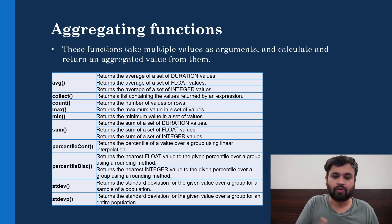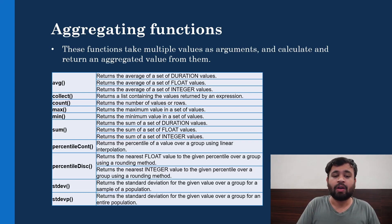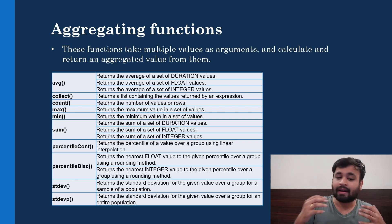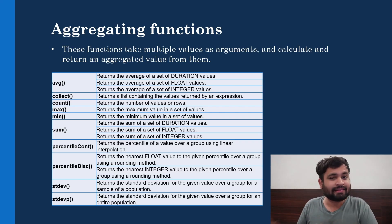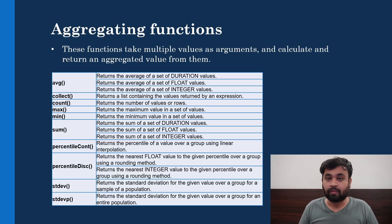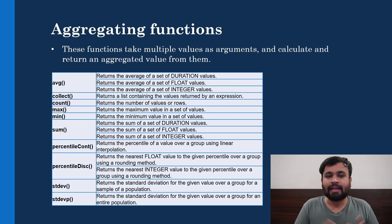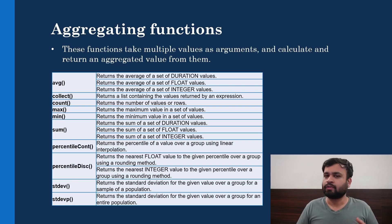These advanced functions aren't used as often in analytics queries but are good to know. Percentile_cont returns the percentile of a value over a group using linear interpolation. Percentile_disc returns the nearest float value to a given percentile using a rounding method. Stdev returns the standard deviation for a sample, while stdevp returns it for an entire population. I hope you now understand what aggregating functions are and how to use them in your Cypher queries.